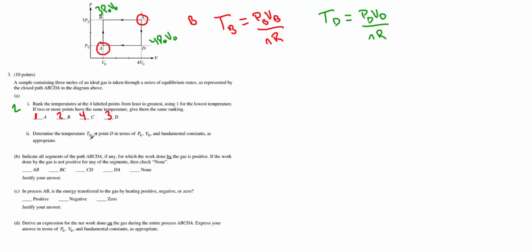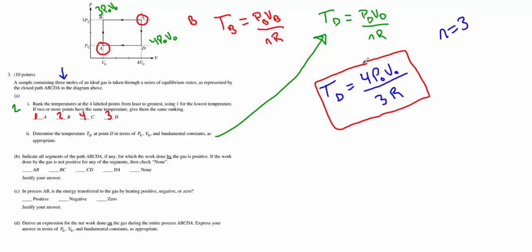A2 wants us to determine the temperature Td at point D in terms of P and V0 and our fundamental constants. Well, that's basically what I did up here, but now I just need to plug in my values for P and V. So the answer to A2 is Td equals the P at that spot, which is P0, and the V at that spot, which is 4V0, so I'm looking at 4P0V0, all over... don't make this mistake. N is not 1, and it's not a constant. They told us 3 moles, so N is equal to 3, so I've got to divide this by 3R, and that will be my final answer for A2.